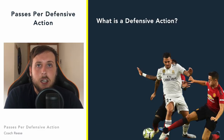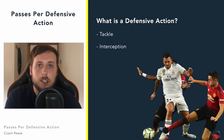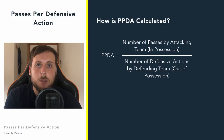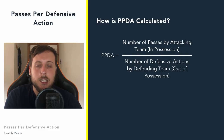So what is a defensive action? A defensive action is a tackle, an interception, any challenge — and this challenge doesn't have to be successful — or a foul. The equation for calculating passes per defensive action is: number of passes from the attacking team divided by number of defensive actions from the defending team.